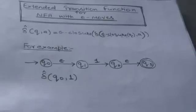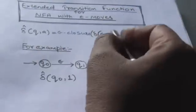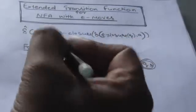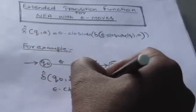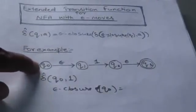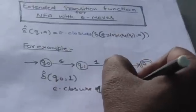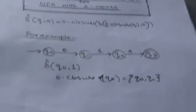It will be clear after doing this example. We have an NFA with empty moves and we have to find the output of the extended transition function where the current state is q0 and input symbol is 1. First, find the epsilon closure of the present state. There is an empty transition from q0 to q1, so epsilon closure of q0 will include q0 and q1.